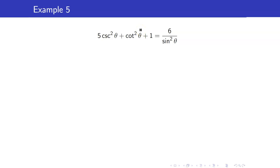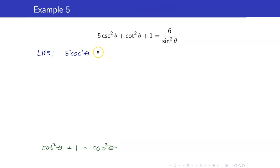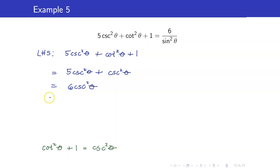Next, we have 5 cosecant squared theta plus cotangent squared theta plus 1. Recall one of the three Pythagorean identities: cotangent squared theta plus 1 equals cosecant squared theta. So for the left-hand side, I will write cotangent squared theta as cosecant squared theta minus 1, giving 5 cosecant squared theta plus cosecant squared theta, which is 6 cosecant squared theta. Cosecant squared theta is the reciprocal of sine squared theta, which is our right-hand side. This example shows that it is very important to use previously known identities, rather than always expressing in terms of sine and cosine, as that approach would result in longer steps.